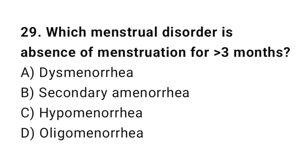Question 29. Which menstrual disorder is absence of menstruation for greater than 3 months? The right answer is B: Secondary amenorrhea.